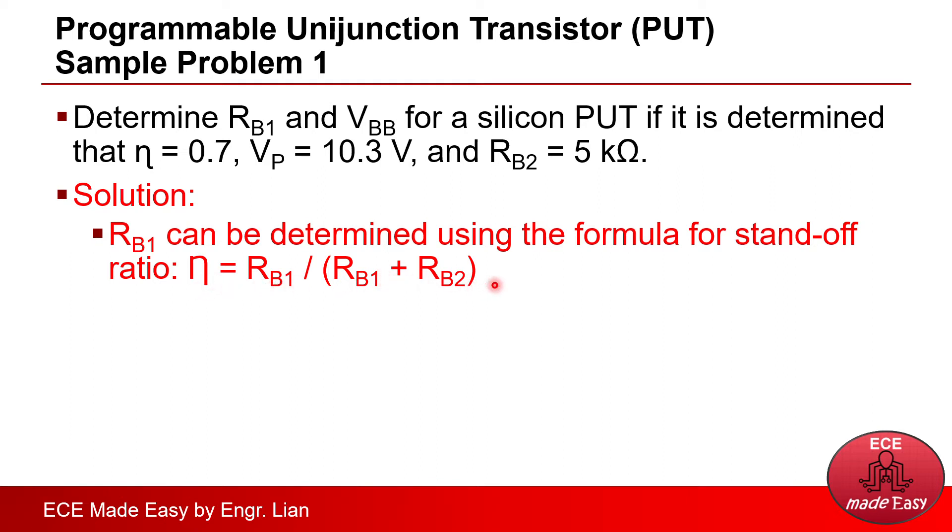And this is the same formula that we have been using since the previous topic, which is UJT. Since all the values are given, we just need to substitute the values and solve for RB1, and we will be able to get 11.667 kilo ohms. And that is the final answer.